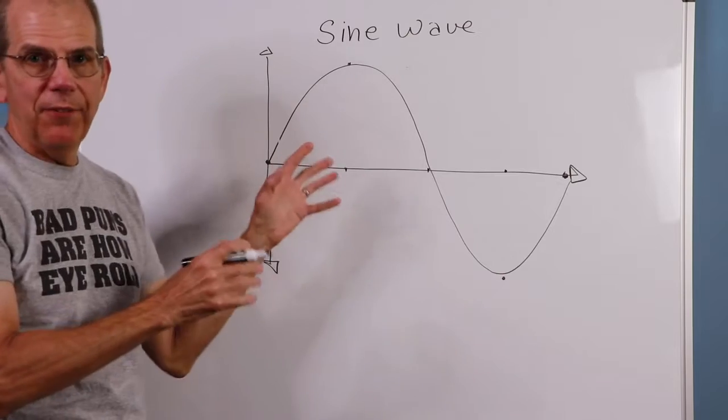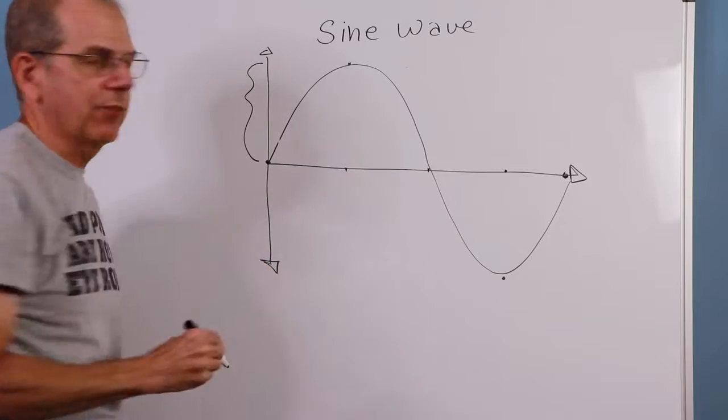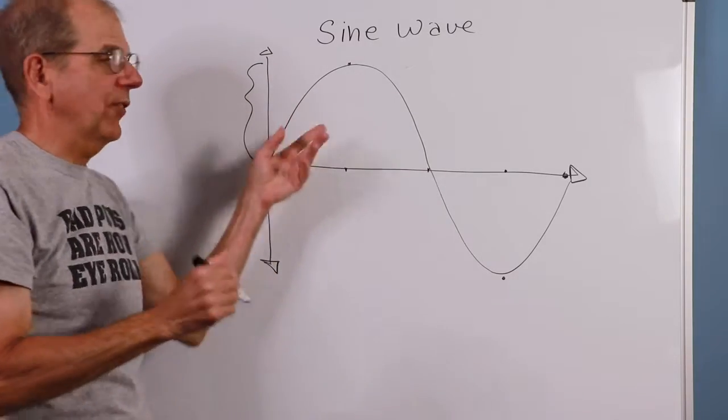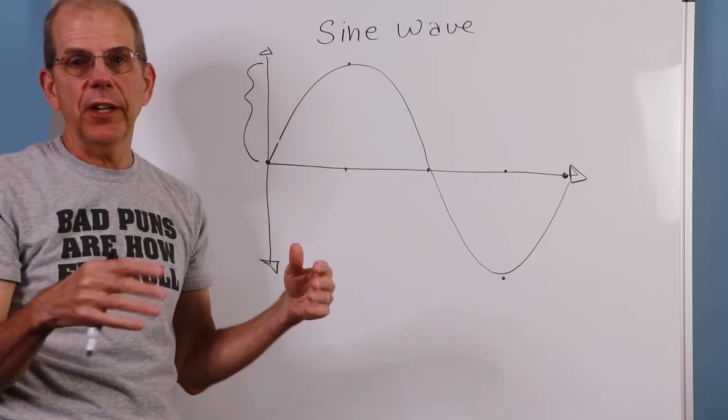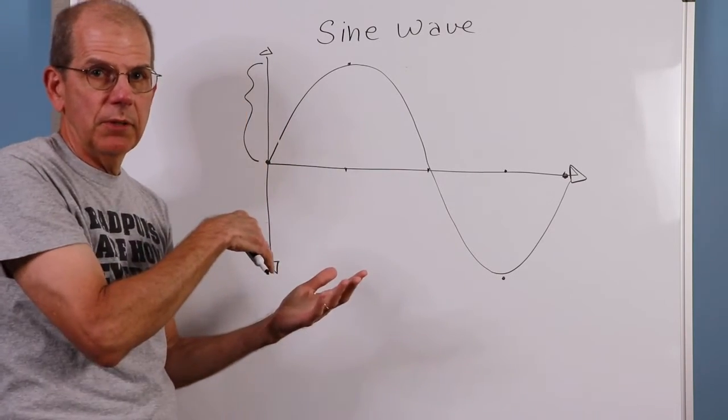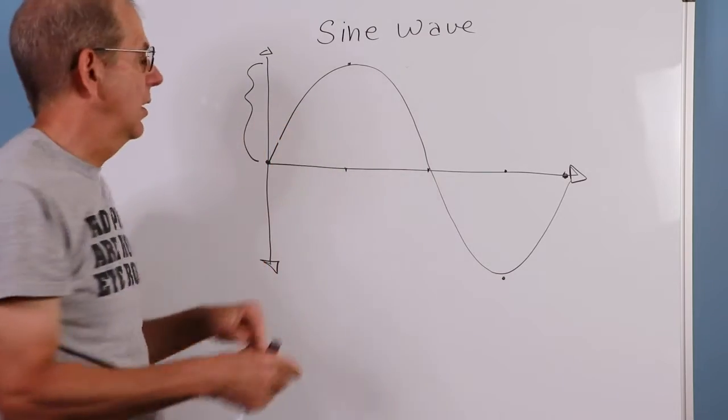So how do I quantify this? Well, there's a couple of characteristics I'm interested in. For example, how tall is this? What is its amplitude? And the units for that will depend on what we're talking about. If we're talking about sound and air, I would care about a pressure value. If we're talking about an electrical circuit, that could be a voltage or a current.